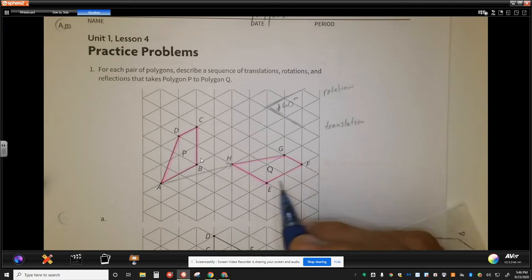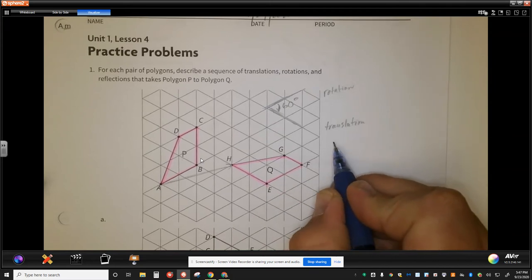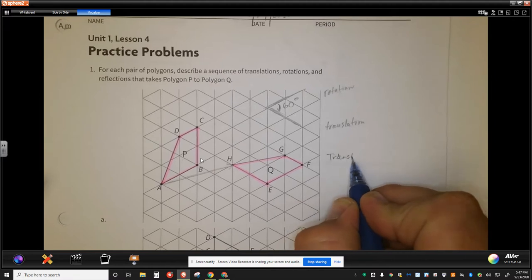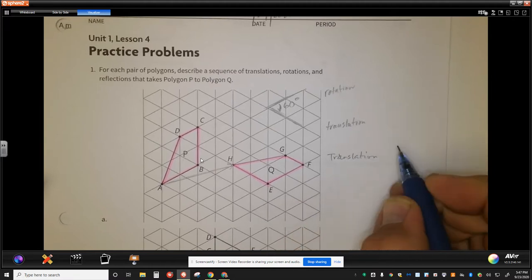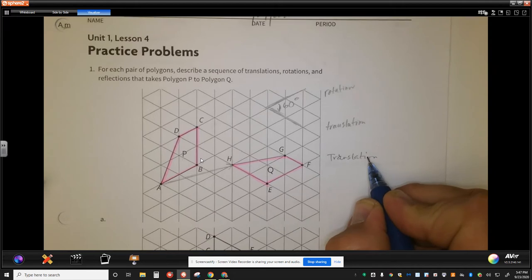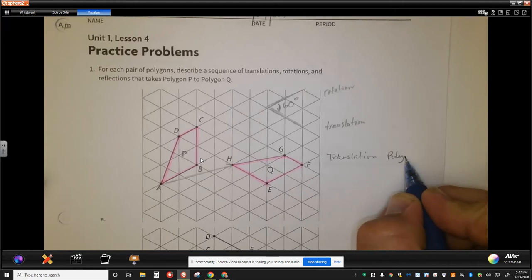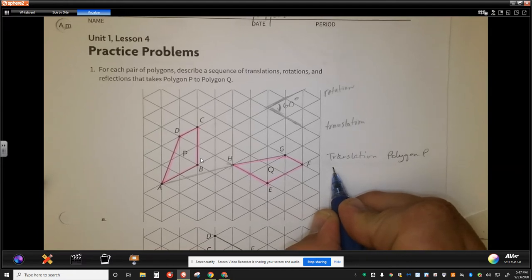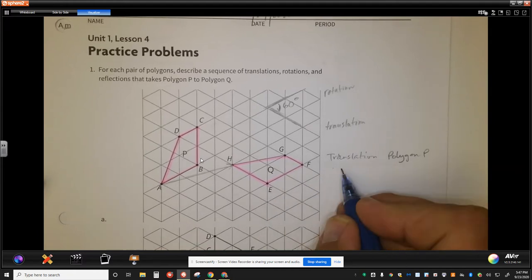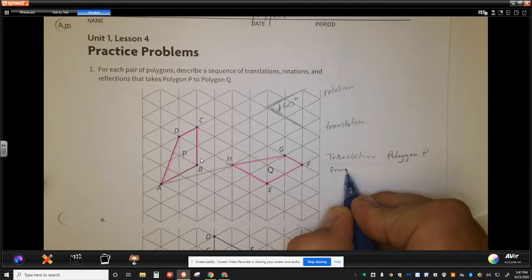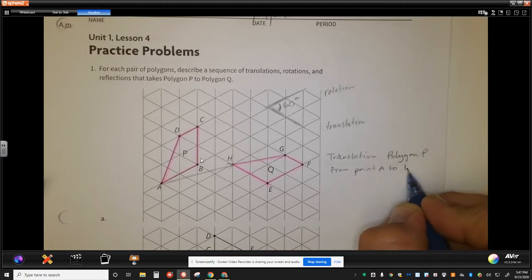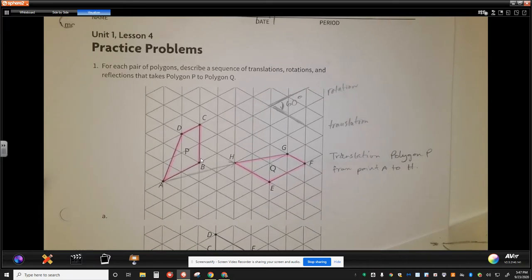Don't forget to name your figure when you write this. So you say on here translate polygon P using points or along a vector from point A to H, right? And then describe the rotation.